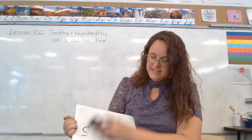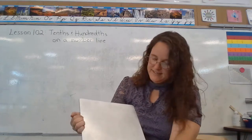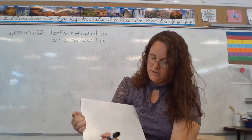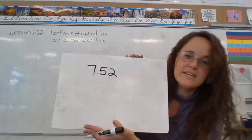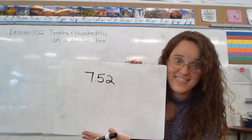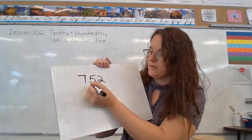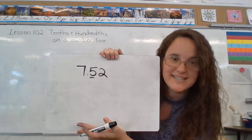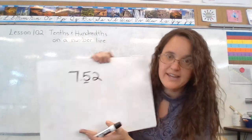The next one says round 7 and 52 hundredths to the nearest tenth. So we're not rounding to the whole number, we're rounding here to the nearest tenth. We can look on the number line,